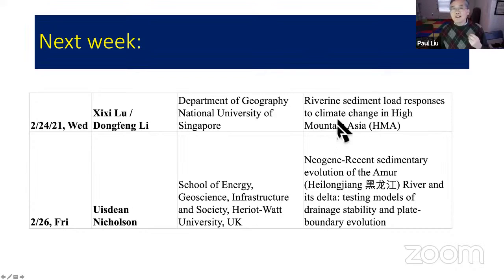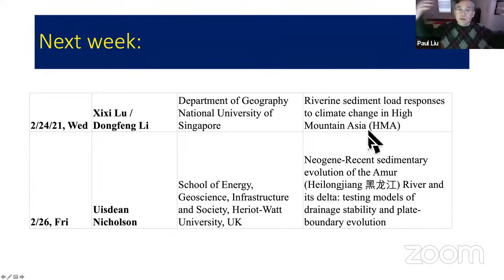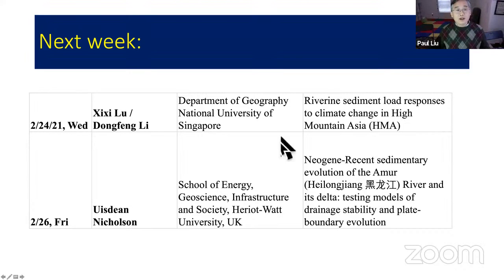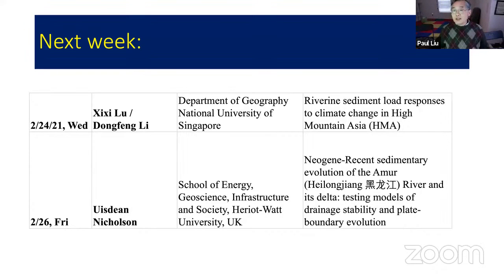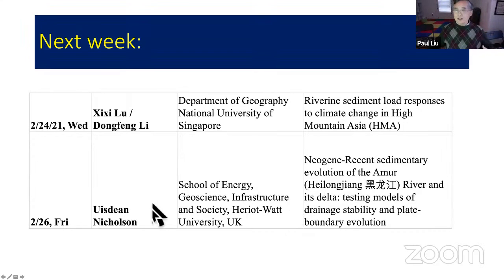Professor Xi Xi and his student will talk about river sediment load response to climate change in High Mountain Asia, particularly the Himalayan mountain area — how sediment discharge changes with global warming. Also, a speaker from the UK will talk about the Amur River, a relatively unstudied river between China and Russia, discussing its delta evolution. Mark your calendars for next Wednesday and next Friday.